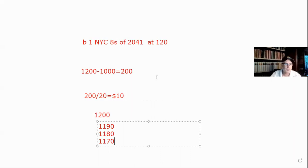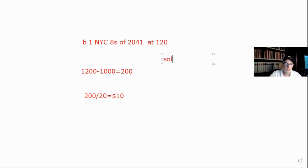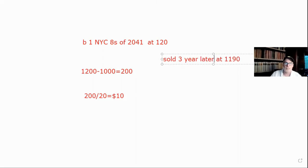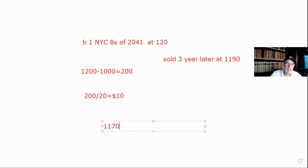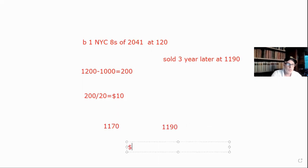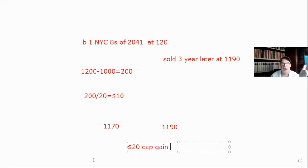Let's say same situation, but three years later we sold it at 1190. We bought at 1200, reduce by $10 per year for three years — that's $30 — so our new cost basis is 1170. We sold at 1190, so we actually have a $20 capital gain. Yes, even though we bought at 1200 and sold at 1190 for a nominal loss, the IRS says you have a $20 cap gain. That's amortization.